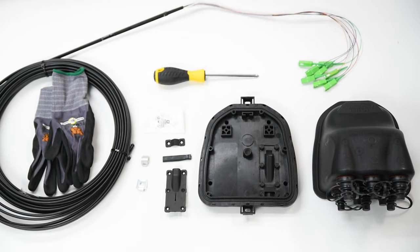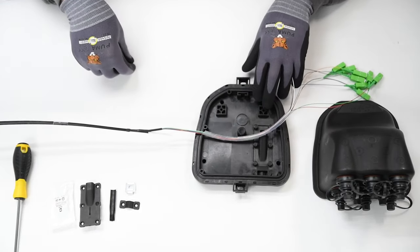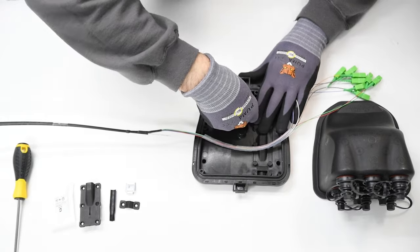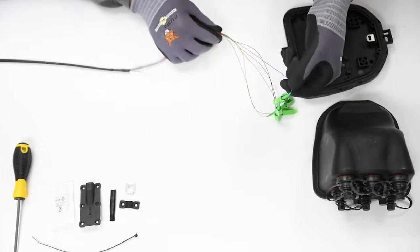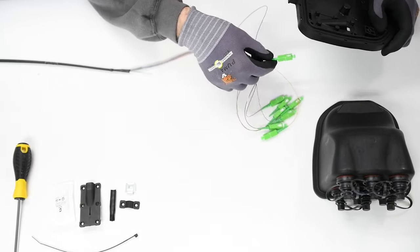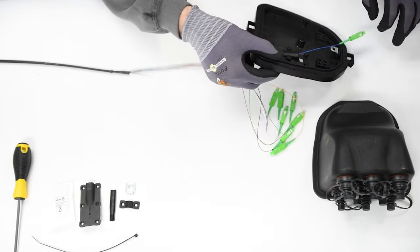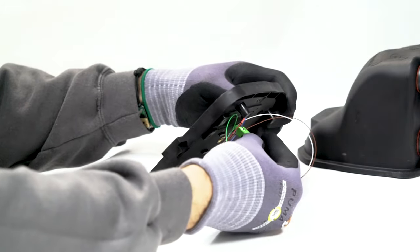Insert the included fiber management clip into the slot on the middle of the base. Insert each connector one at a time through the open slot in the base of the Fiber Tap Plus. Be sure to follow the fiber bend radius as it may cause the fiber to kink or break.